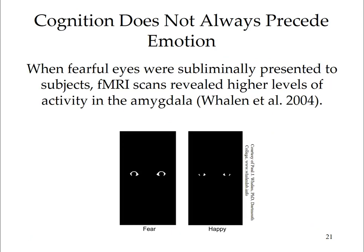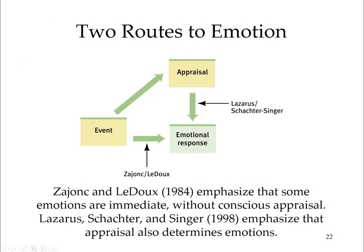Cognition does not always precede emotion. When fearful eyes were subliminally presented to subjects, fMRI scans revealed higher levels of activity in the amygdala. Zajonc and LeDoux emphasized that some emotions are immediate, without conscious appraisal, while Lazarus, Schachter, and Singer emphasize that appraisal also determines our emotions.